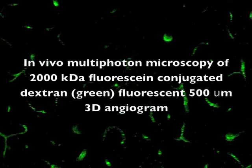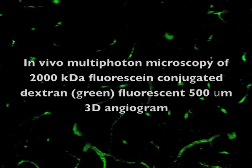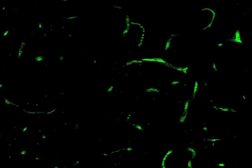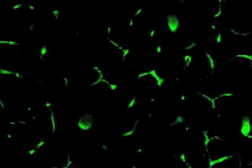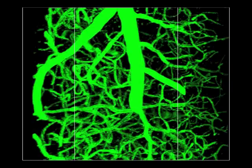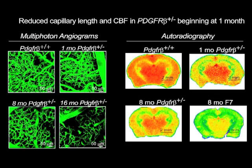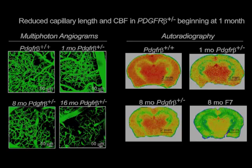Using in vivo multi-photon microscopy as shown here, we were able to generate 500-micron thick Z-stack fluorescent angiograms after a tail-vein injection of 2,000,000 DL fluorescein-conjugated dextran. We found a significant reduction in the length of perfused capillaries, which corresponded to reduced cerebral blood flow measured by autoradiography beginning at one month of age in pericyte-deficient mice.